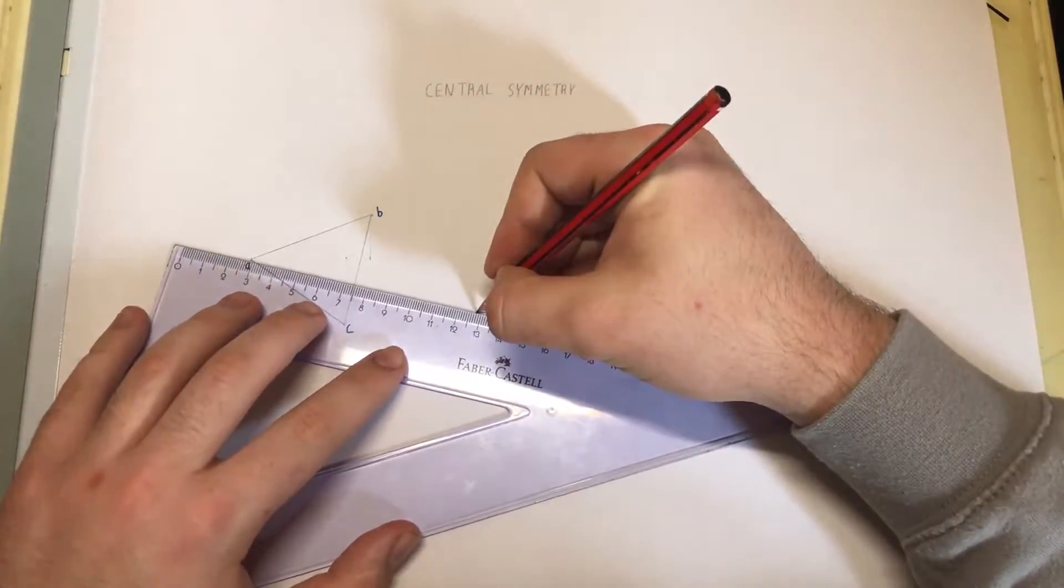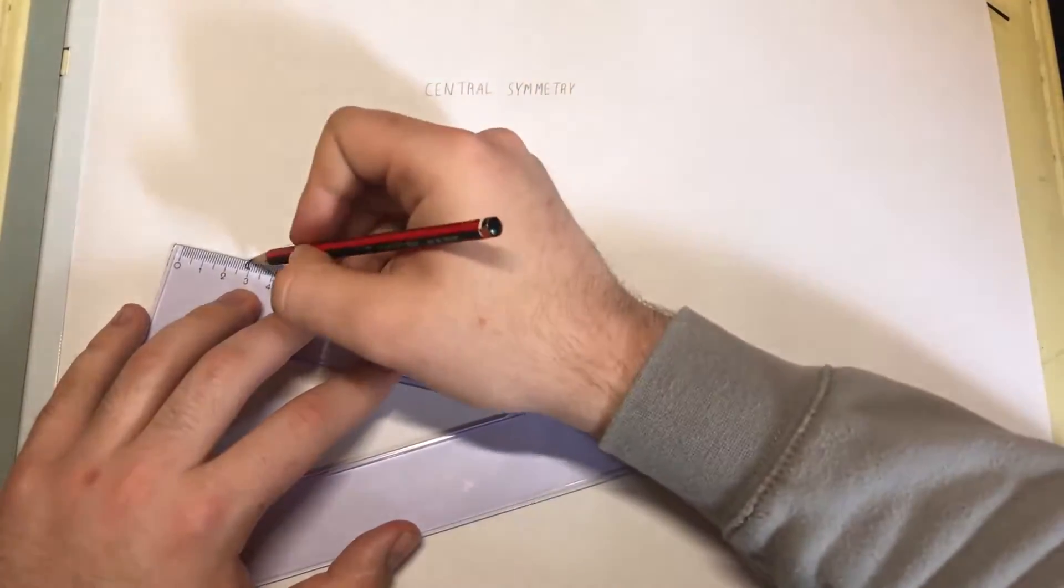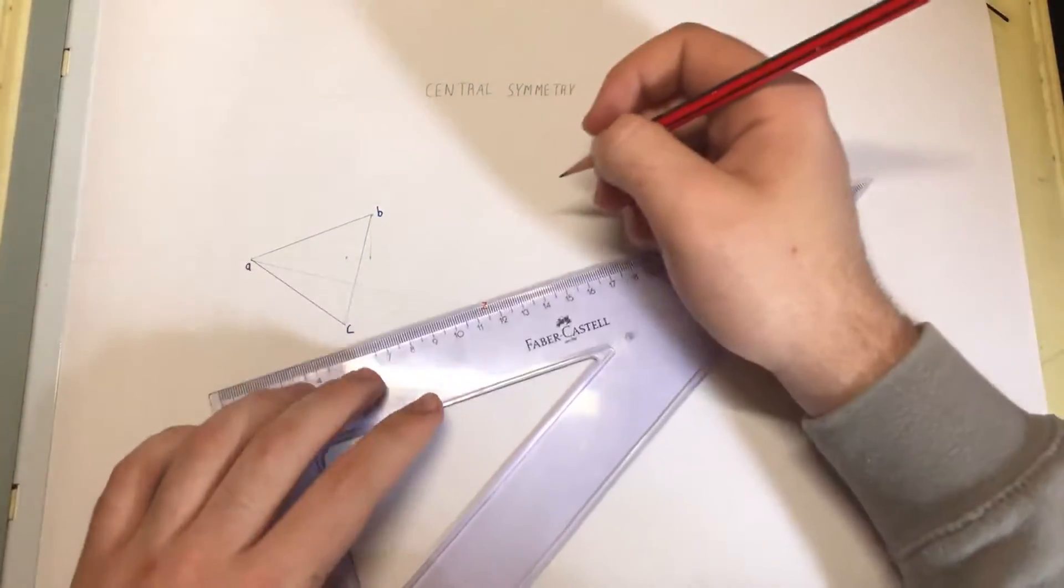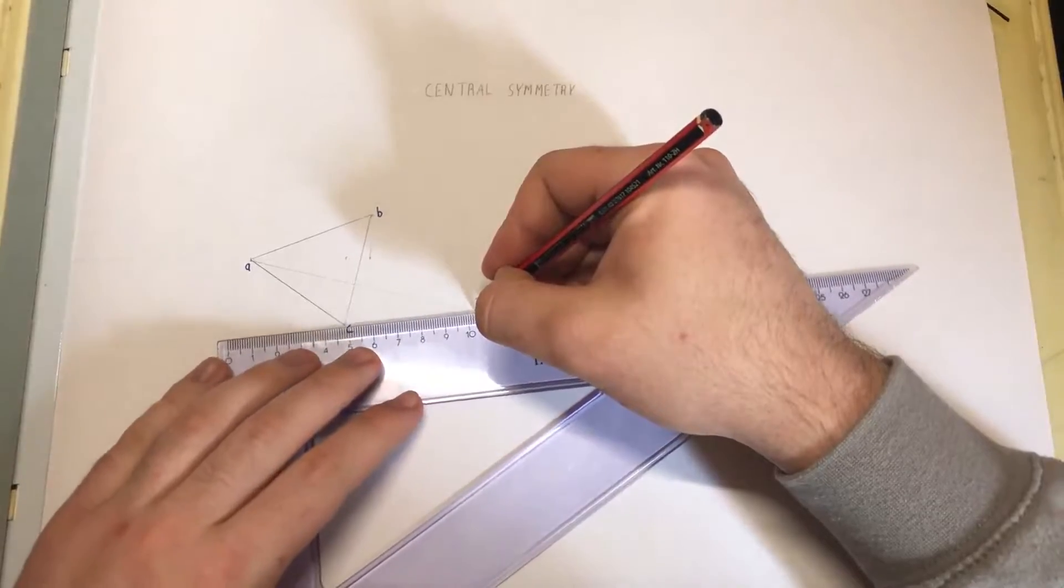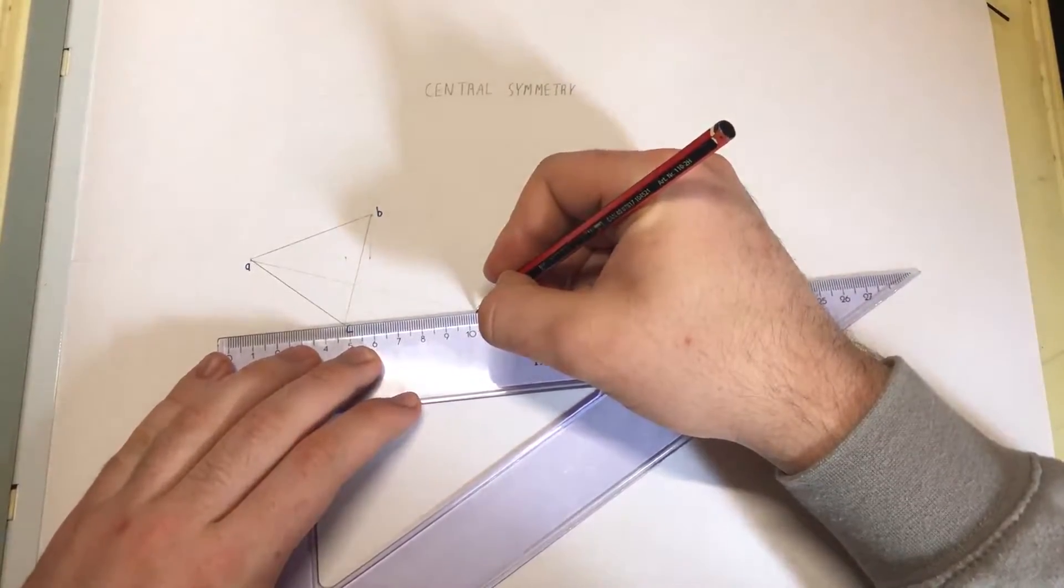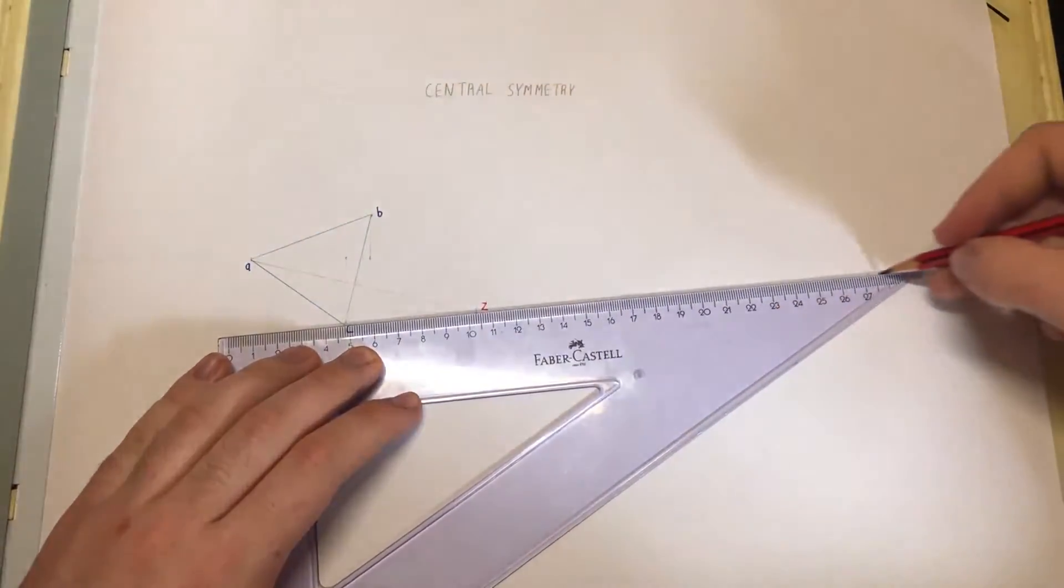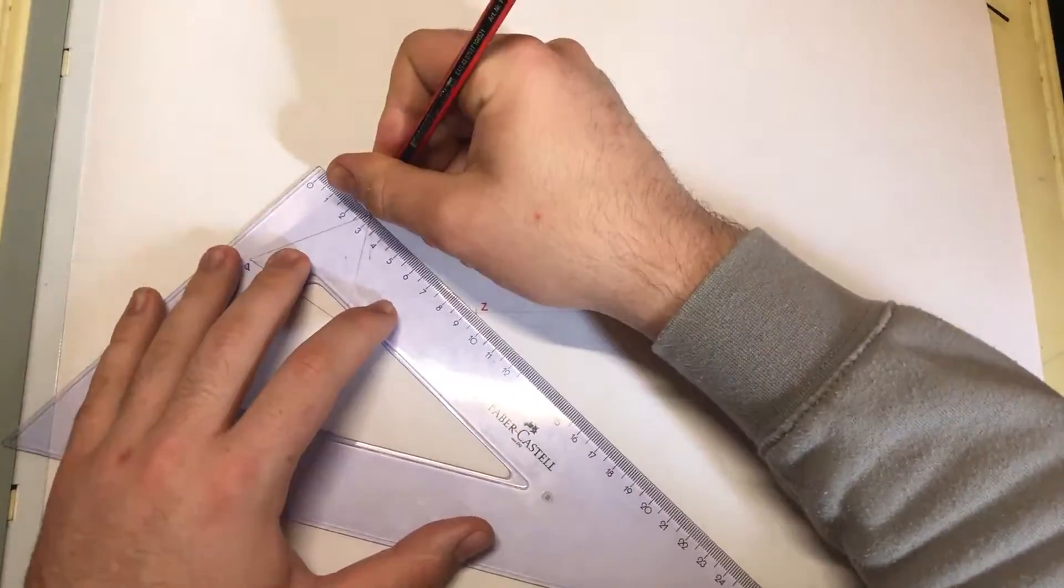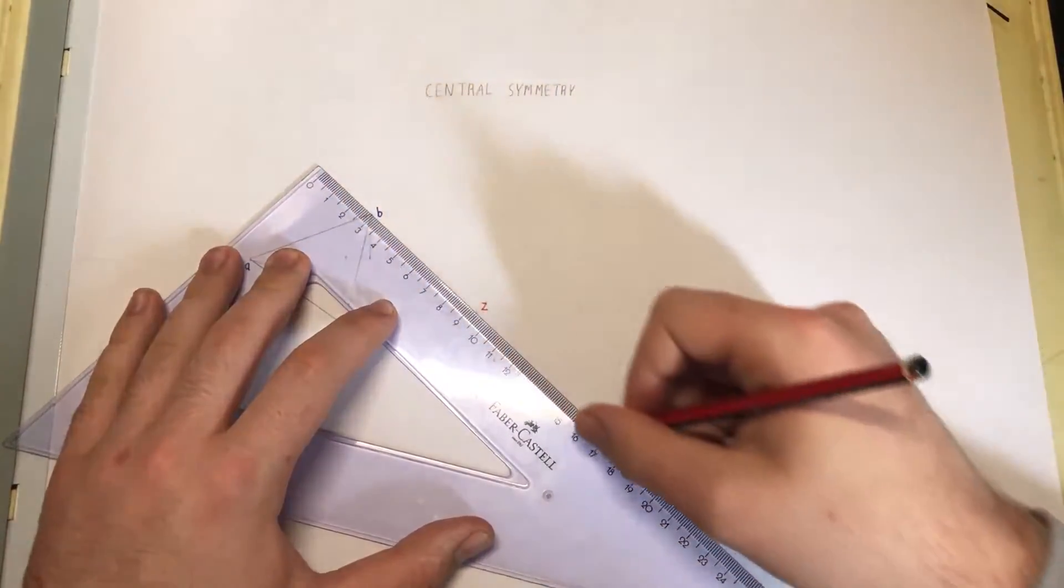Now we are going to go from A through Z, from C through Z, and from B through point Z.